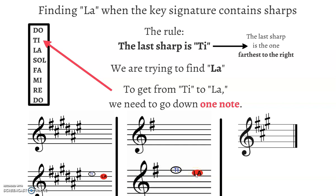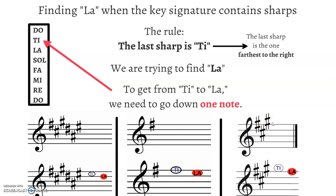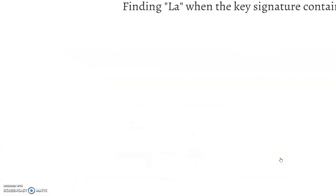Final example. On this one, your last sharp sits right above the line. Ti is here, and La is one step down. All right, let's do flats.